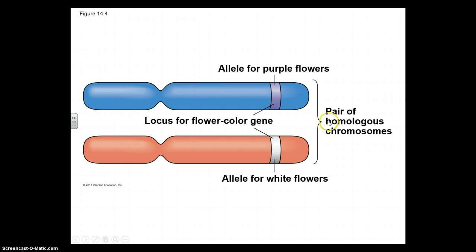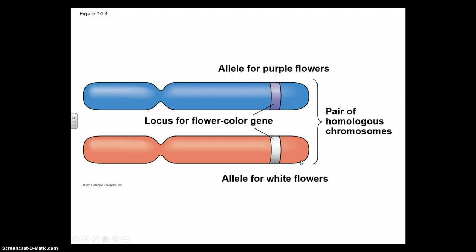Here's the chromosome with the specific locus for flower color. The allele for purple flowers and the allele for white flowers are two separate alleles at the same locus. These two chromosomes are homologous chromosomes, meaning they carry the same alleles — typically one coming from the father and one from the mother, recombining to give a complete set of chromosomes.